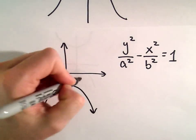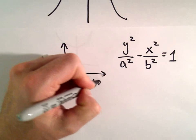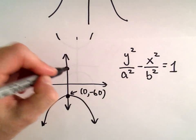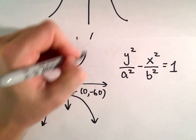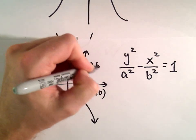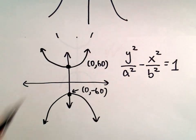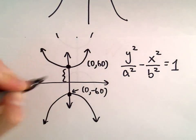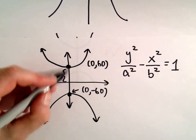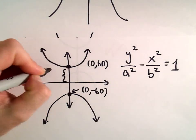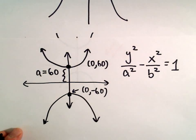Okay, so we could label this as the point 0, negative 60. Correspondingly, the other vertex would be at 0, positive 60. But again, the distance from wherever it's centered to a vertex, that's going to be our a value. So already we know that a equals 60.